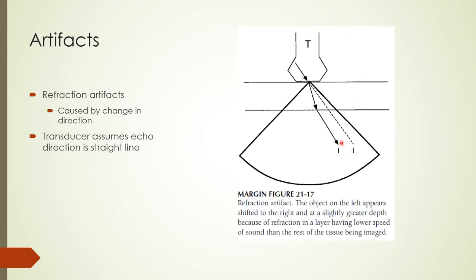On this slide, you can see the location of an object reflecting an echo back to the transducer. The echo travels along a refracted path and returns to the transducer, but because the transmitted beam was pointing in a different direction, the processor assumes a straight-line path and misplaces the object — this is a refraction artifact.